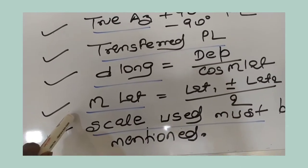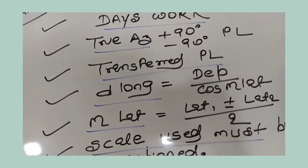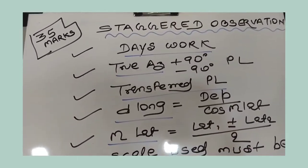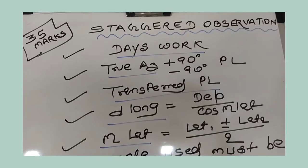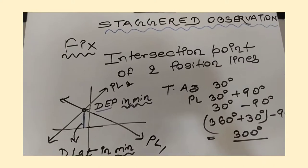Scale that you are going to use must be mentioned in the answer sheet because it needs plotting for staggered questions. This is the basic requirement for solving staggered observation questions. One more thing you should know is what is a fix.